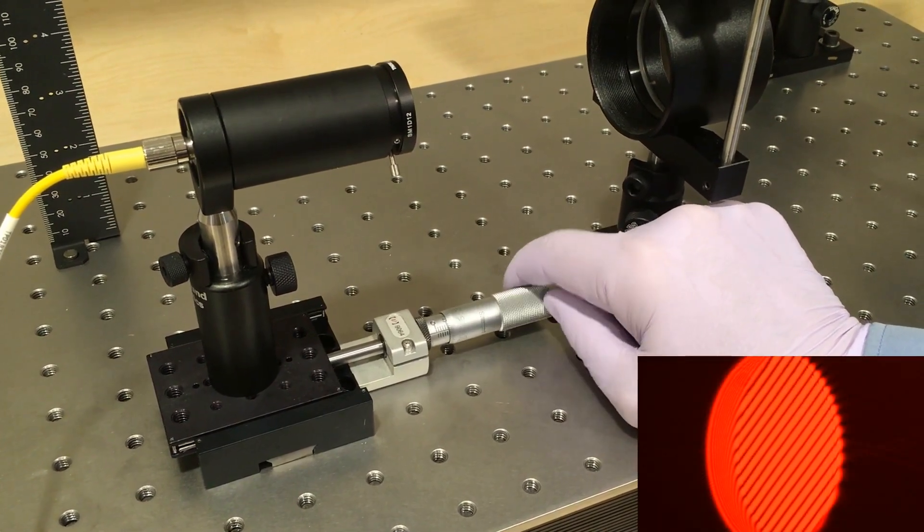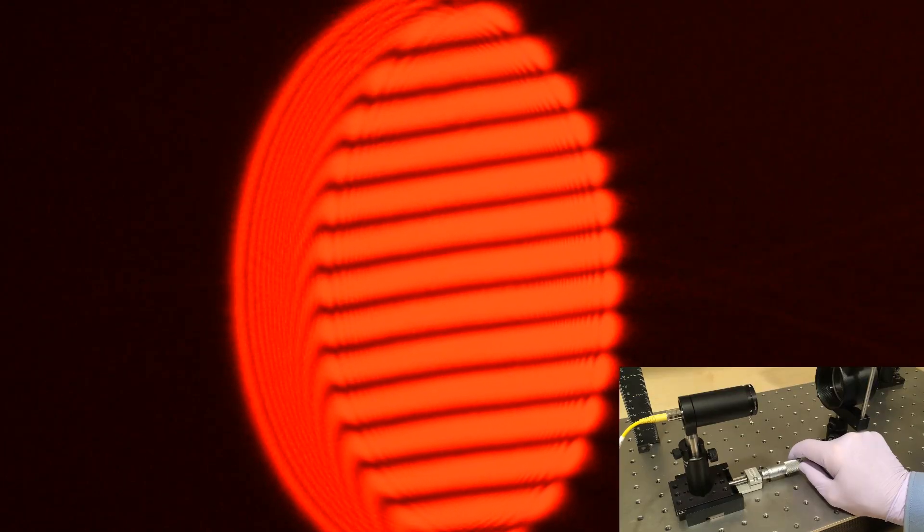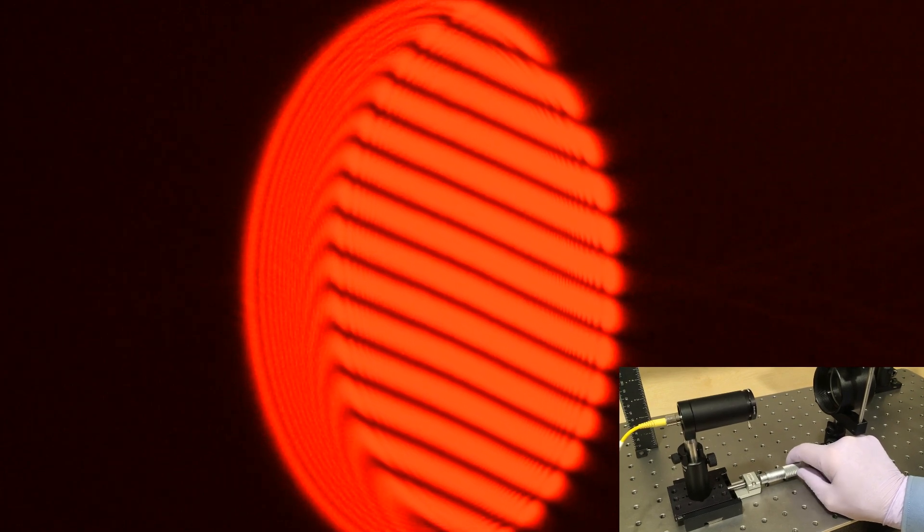This is a video of the fringe pattern as the object distance is scanned through focus. As the micrometer is adjusted, the fringes rotate. When they're horizontal, the wavefront is flat and the light is collimated. The most common application of a shear plate is to produce a collimated beam through this kind of manual adjustment and visual inspection.